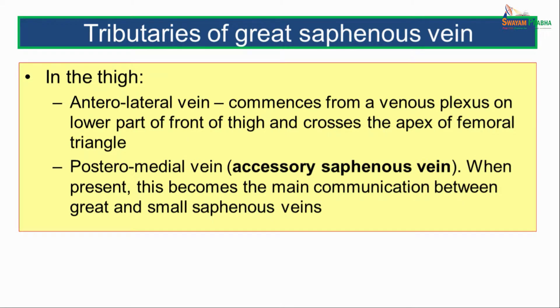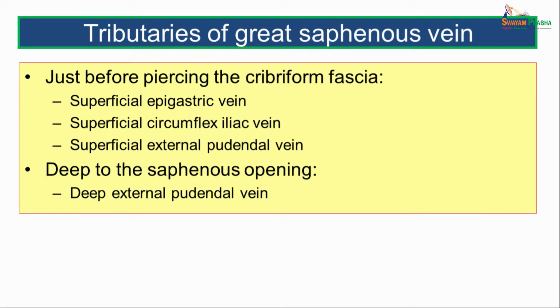The posteromedial vein, also known as the accessory saphenous vein, when present, becomes the main communication between the great and the small saphenous veins. Just before the great saphenous vein pierces the cribriform fascia, it receives three superficial veins: the superficial epigastric vein, the superficial circumflex iliac vein, and the superficial external pudendal vein. The superficial epigastric and superficial circumflex iliac veins drain blood from the anterior abdominal wall below the umbilicus. The superficial external pudendal vein crosses the spermatic cord superficially and drains blood from the scrotum, also receiving venous blood from the superficial dorsal vein of the penis.